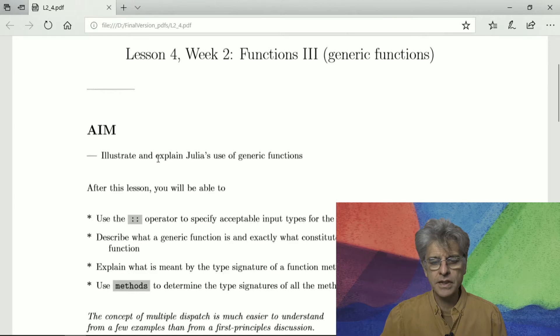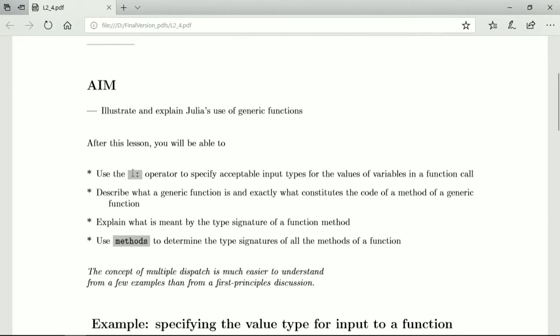Our aim is to illustrate and explain how Julia uses generic functions. After this lesson, you'll be able to use the double colon operator to specify acceptable input types for the values of a variable in a function call.